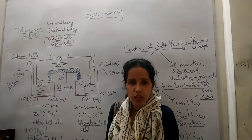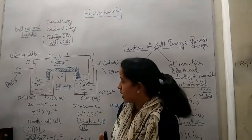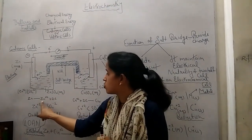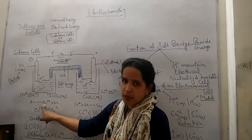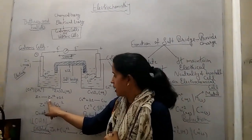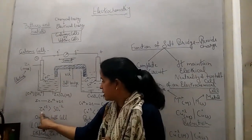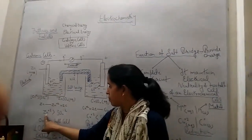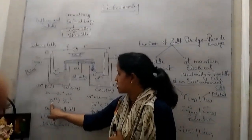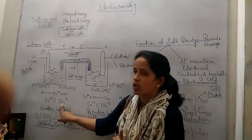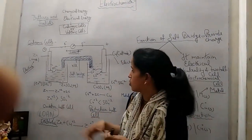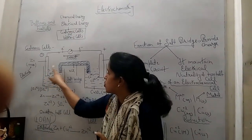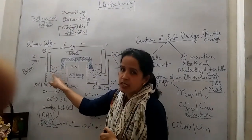First of all, when zinc releases two electrons to become Zn²⁺, the concentration of Zn²⁺ increases in comparison to SO₄²⁻. So the Zn²⁺ ion concentration increases here.